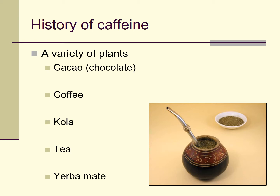The methylxanthines are found in the cacao plant — that's where we get chocolate from — they're found in coffee, cola, tea, and yerba mate. Yerba mate is a plant grown in South America and brewed much like a tea for similar stimulant effects. It's actually quite nice, so if you see some in a health food store, try it. It has caffeine and some of the other methylxanthines as well.